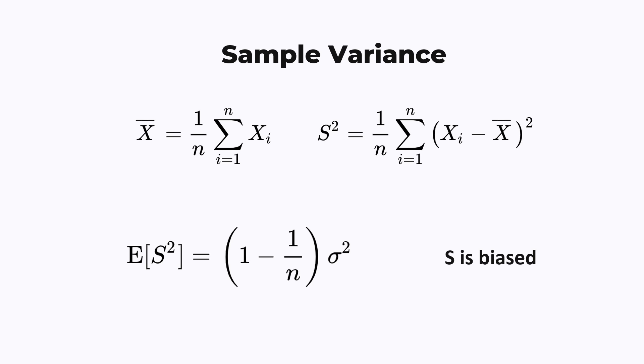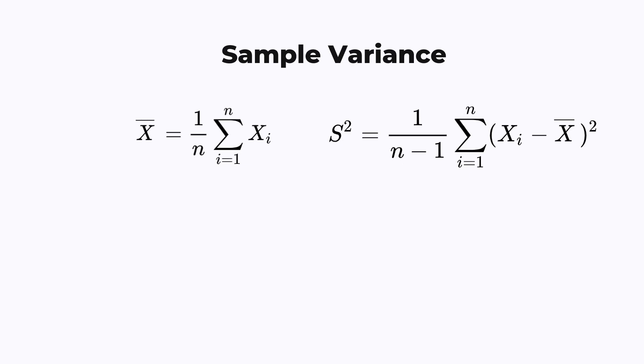So that's why when calculating the sample variance, you will always divide by n-1 instead of dividing by n. And this version of the formula has the correct expected value, so it is unbiased.